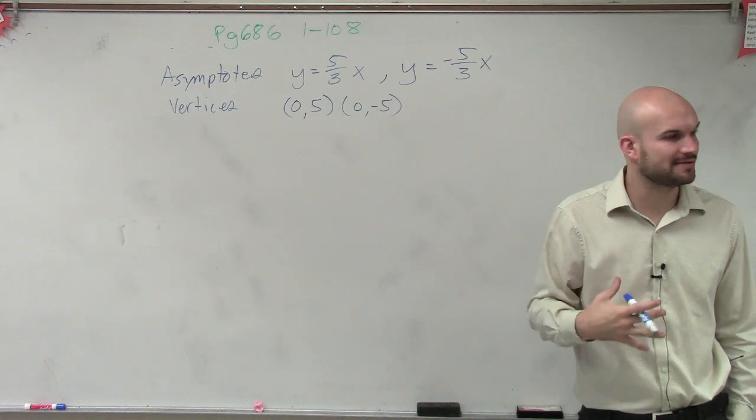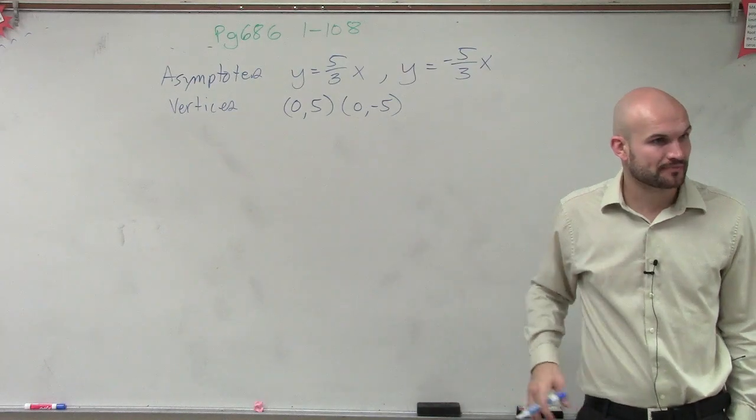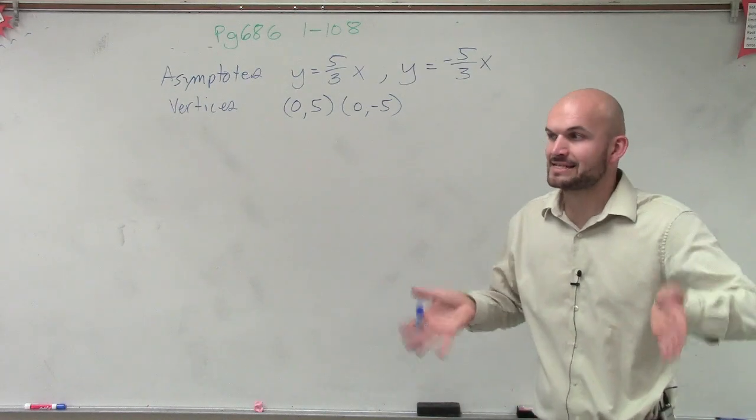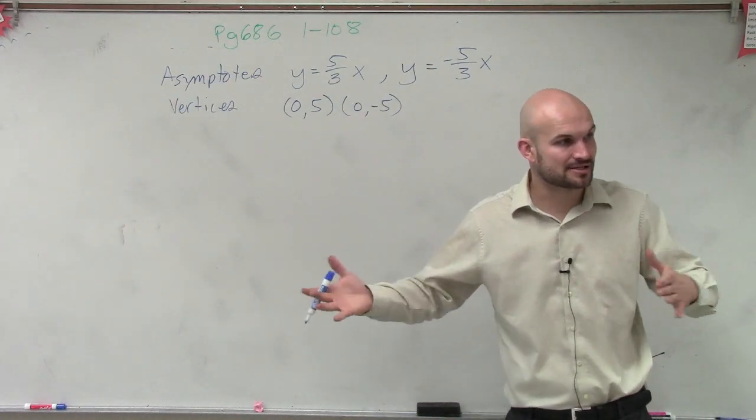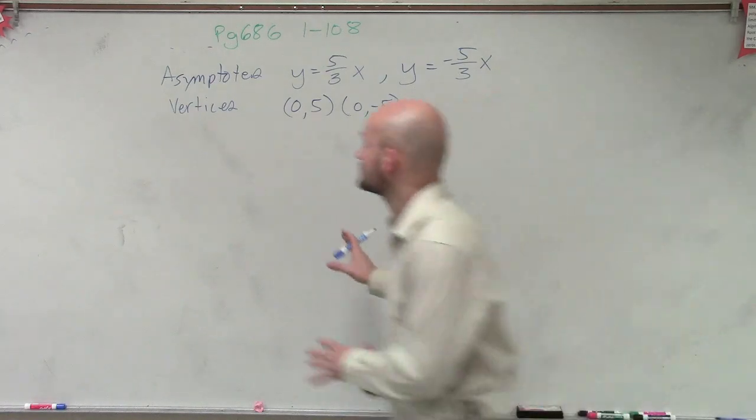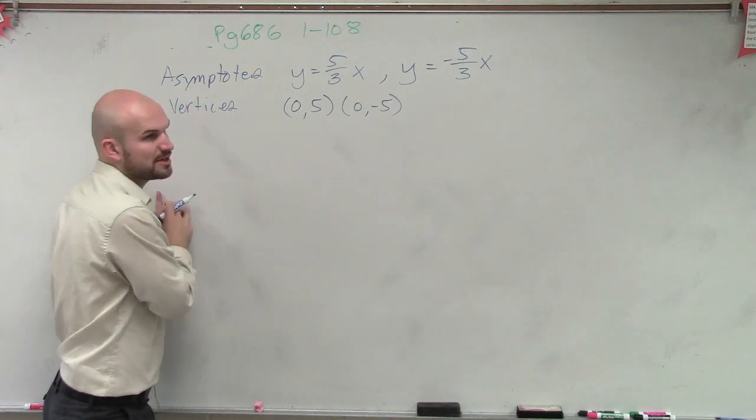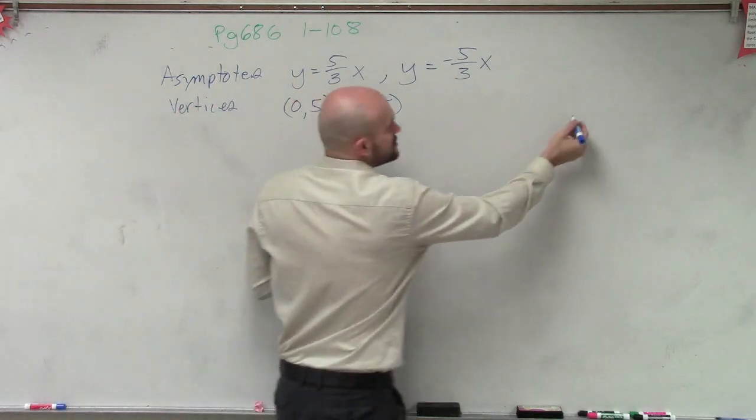I need to figure out which equation I'm going to use. There's one equation where it's x minus h minus y minus k, and the other equation is y minus k minus x minus h. So I need to figure out which one I'm going to use for a horizontal or a vertical. The only information I'm given right now is (0, 5) and (0, -5) are the vertices. So let's plot them.